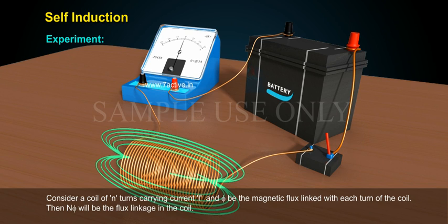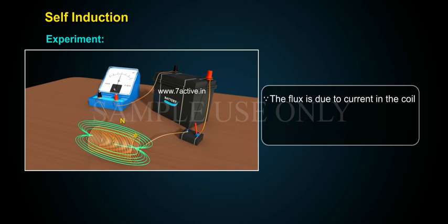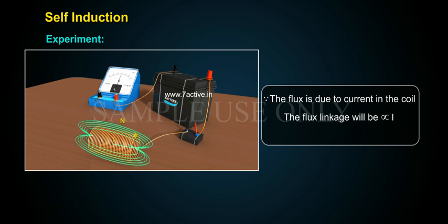Consider a coil of n turns carrying current I, and let phi be the magnetic flux linked with each turn of the coil. Then n·phi will be the flux linkage in the coil. Since the flux is due to the current in the coil, the flux linkage will be directly proportional to the current I. That is, n·phi is directly proportional to I.